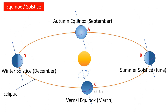Since Earth's axis is tilted to its orbital plane by about 23.5 degrees, as the Earth makes its yearly orbit, one hemisphere faces the Sun more than the other. The hemisphere that faces the Sun more experiences summer during that time of the year, while the other hemisphere experiences winter. Since the Earth's axis is tilted, as the Earth rotates around the Sun, it tilts a little away from the Sun, as shown in position D, or towards the Sun, as shown in position B. The equinoxes mark the exact dates, twice a year, when the Earth's axis is not tilted towards or away from the Sun at all, as shown by points A and C in the diagram.